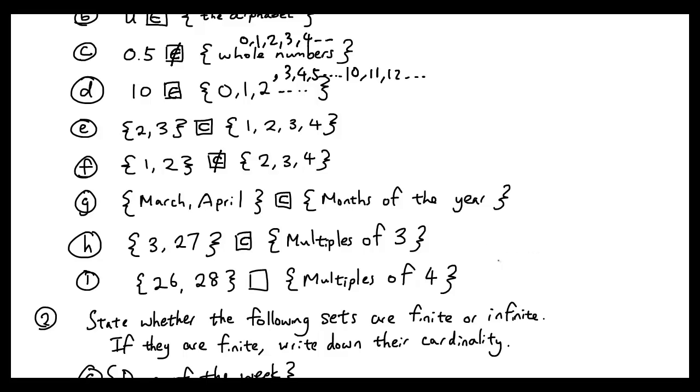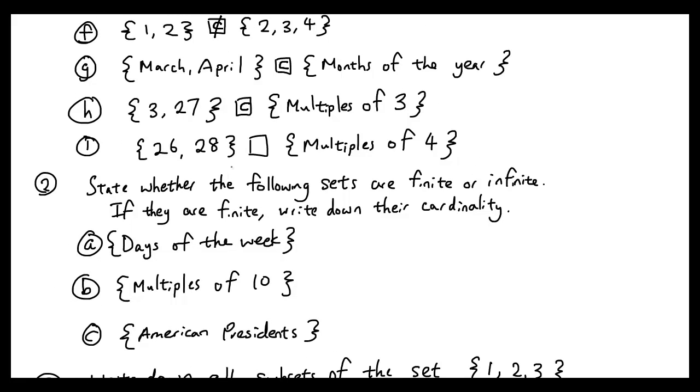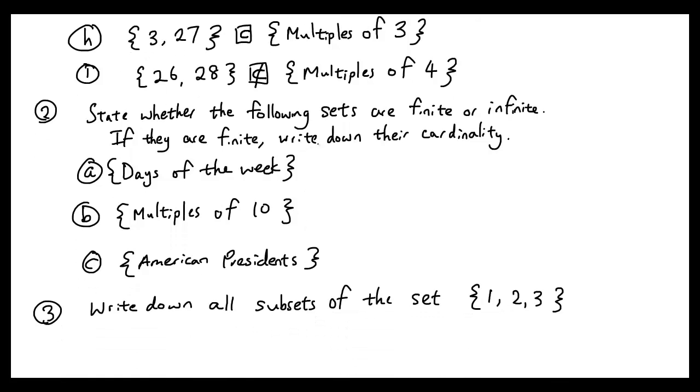{26, 28}—are they both multiples of 4? The answer is no, because 4 times 6 is 24, so 26 is not a multiple of 4. Okay, question 2: state whether the following sets are finite or infinite, and if they are finite, write down their cardinality.